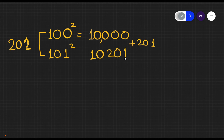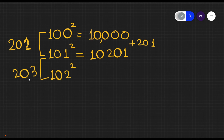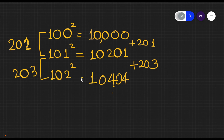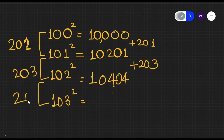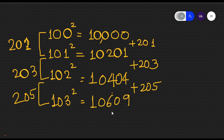For 102 squared, the next number to add is 203. Add 203 to 10,201 to get 10,404. For 103 squared, the sum is 205. Add 205 to 10,404 and you get 10,609. You can start from any known square number and easily find all the squares after it.